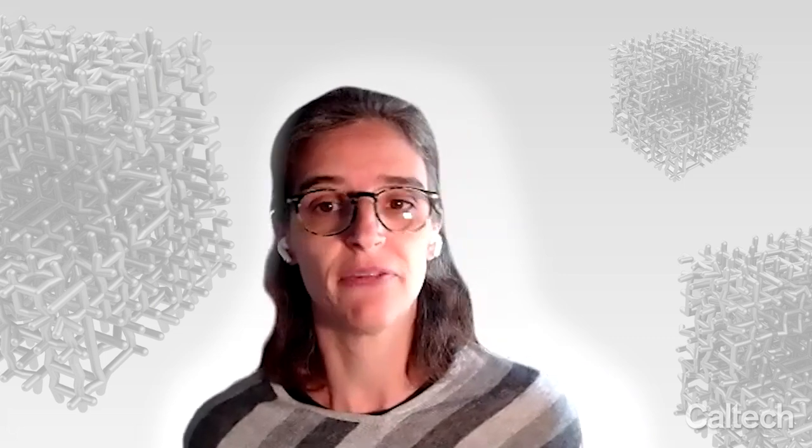Material properties are determined by elemental and molecular properties. The properties of macroscopic constructions, structures like the Eiffel Tower shown here, are determined by both material properties and the structure of their assembly.